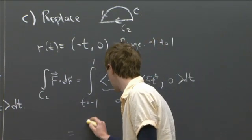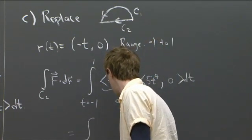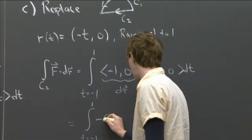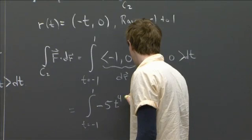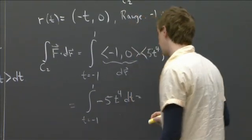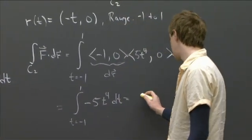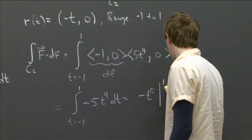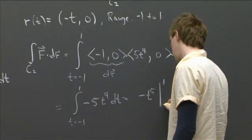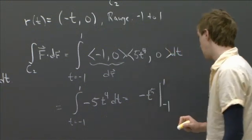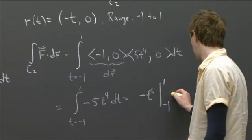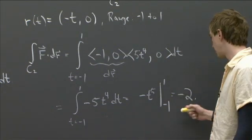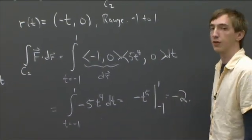So all together, this is a very nice integral to do. So just taking this dot product, all we have is minus 5t to the 4th dt. That's simplified greatly. And we just have minus t to the 5th from 1 to minus 1. And so we get simply minus 2. So that was a much more straightforward integral to do than the one that we started with.